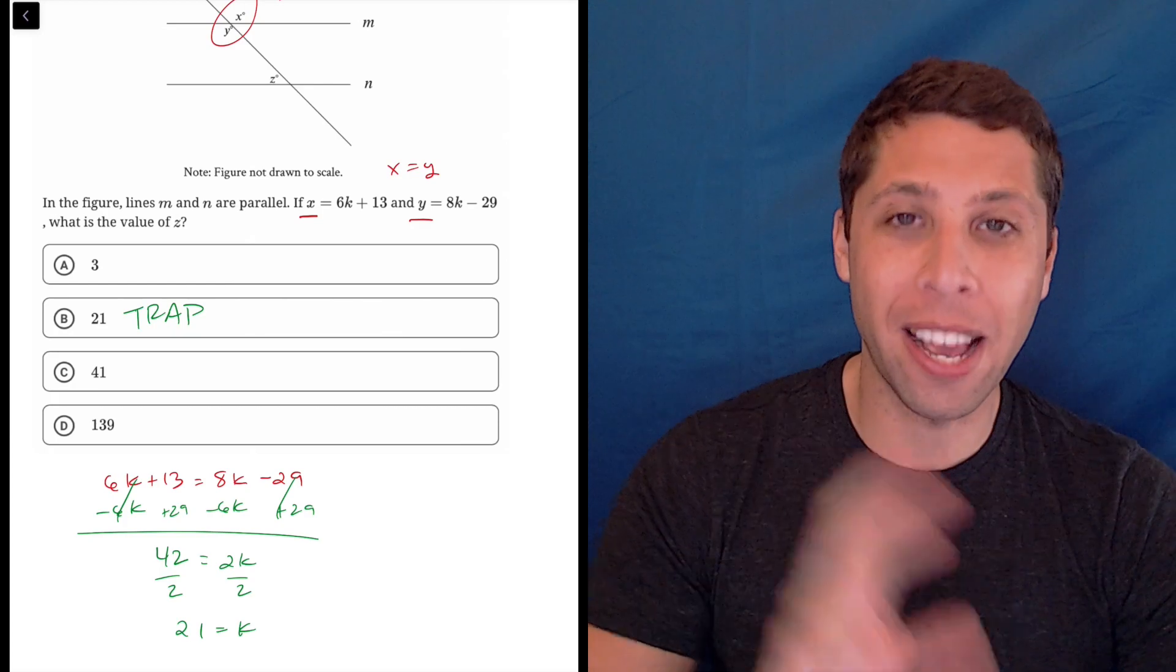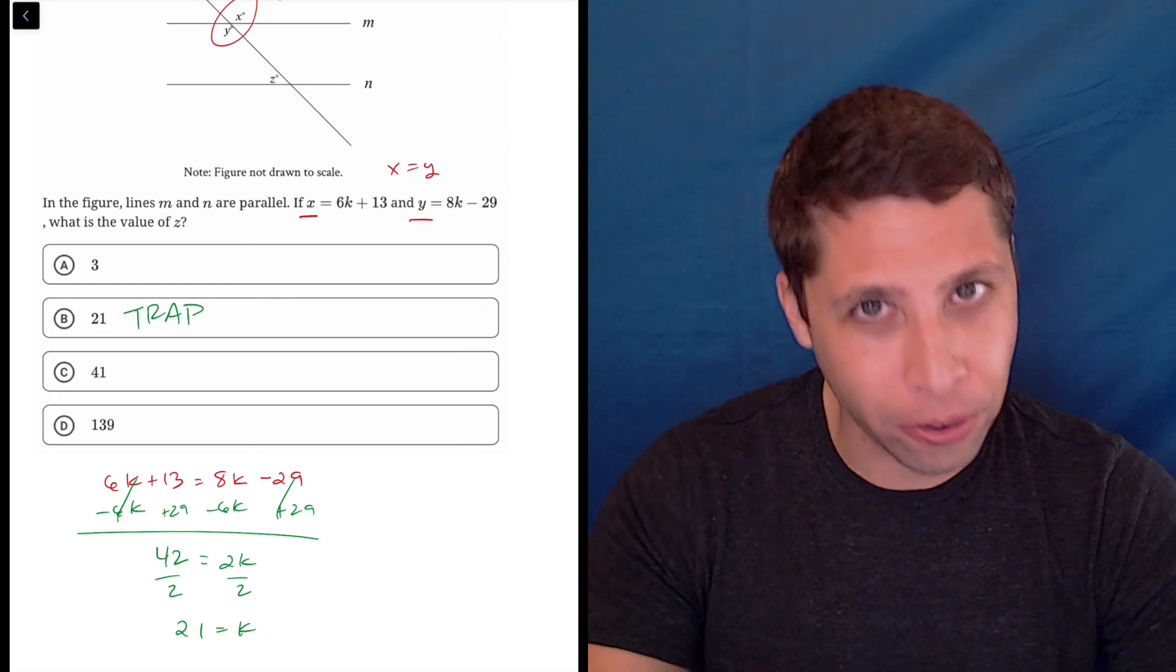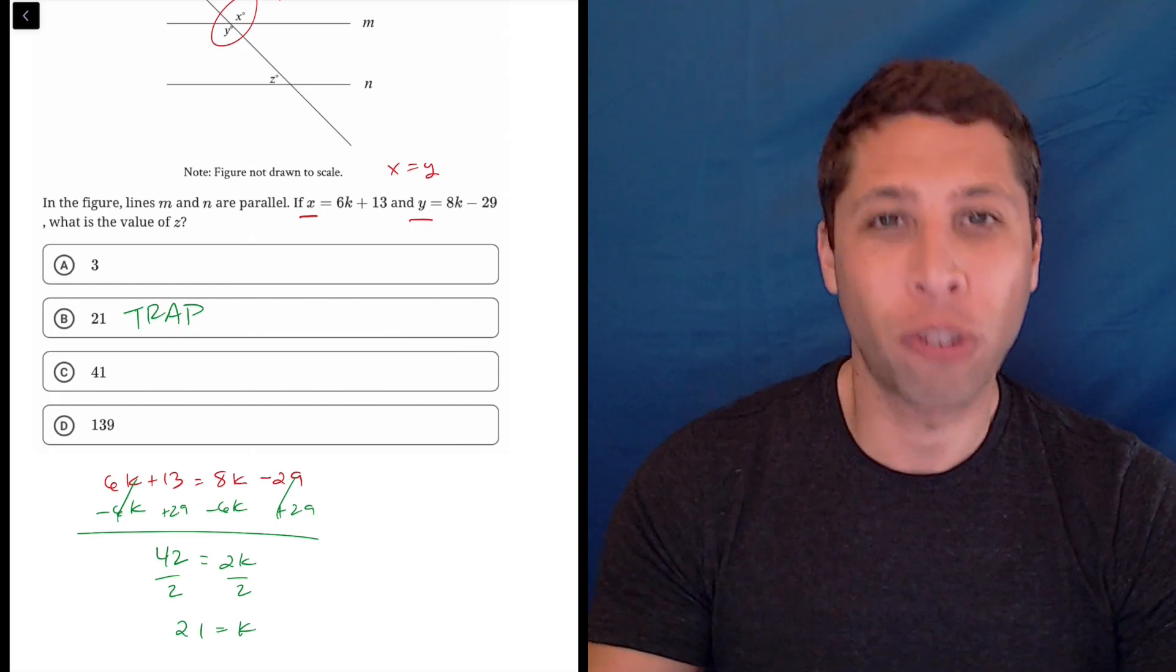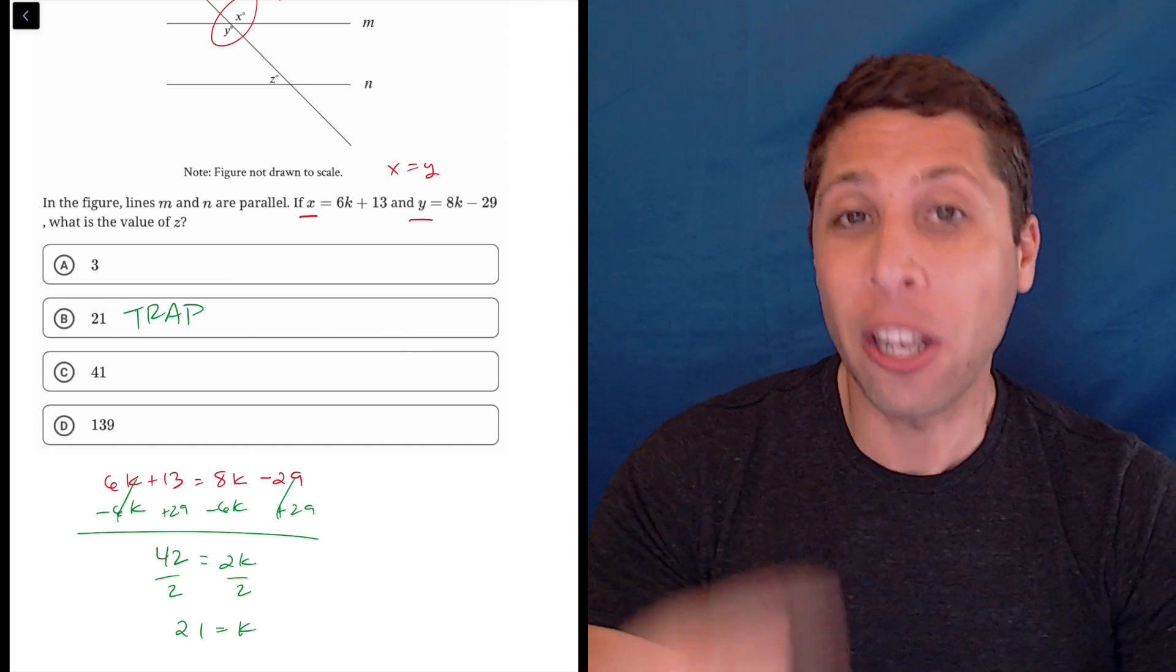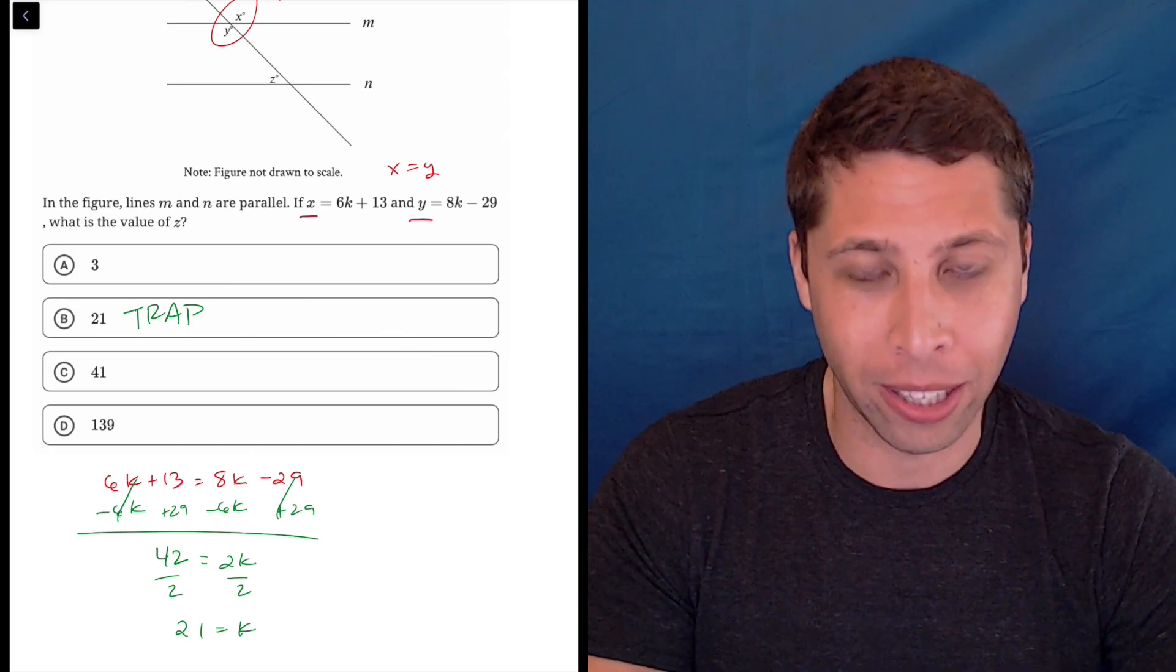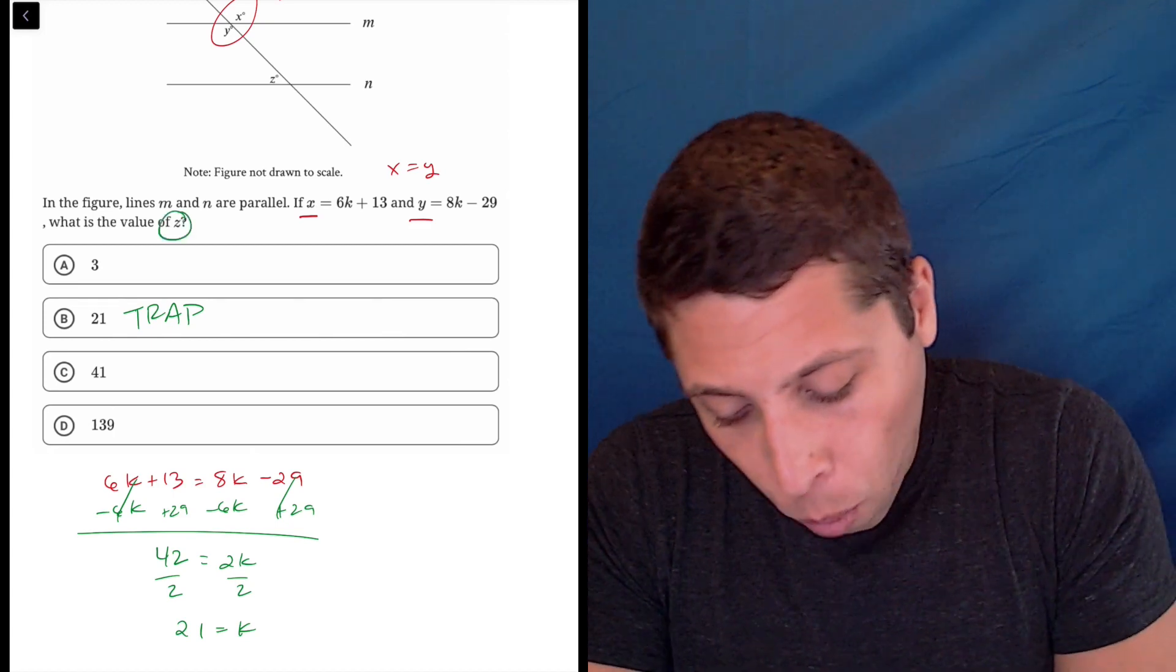But you've got to be careful. Sometimes the SAT wants that. Sometimes it wants something different. And they're always going to put it as an answer choice, trying to get you on this little trap because they know that you're kind of eager to move quickly. So you just got to be careful. What they really want is the value of Z.